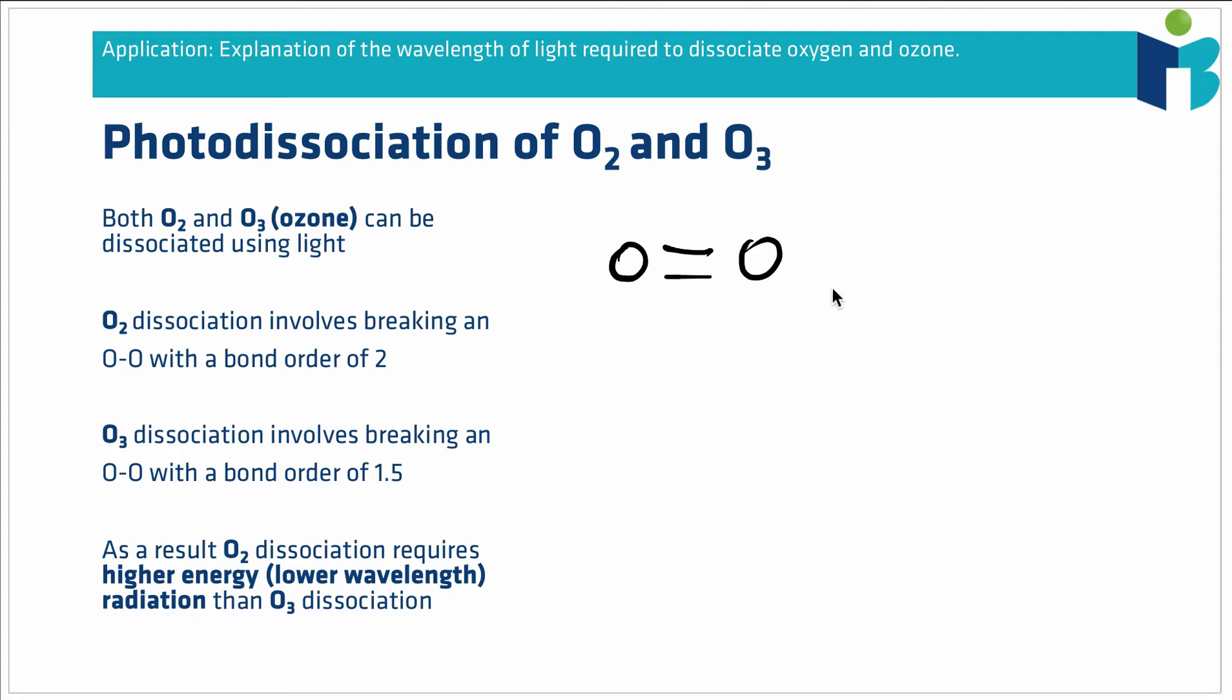However, we also find that pure oxygen can exist in the form of ozone or O3. What we've got to remember in the case of ozone is that we can draw a resonant structure, and hence we can move that double bond between the two oxygen-oxygen bonds.